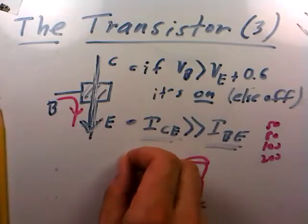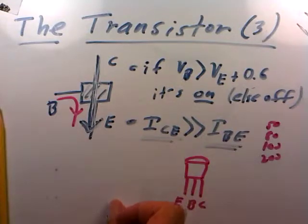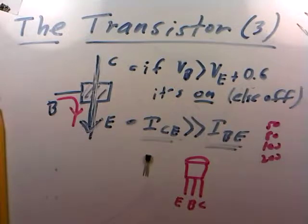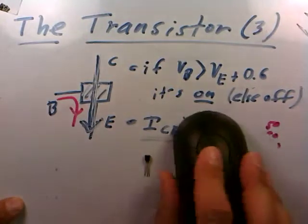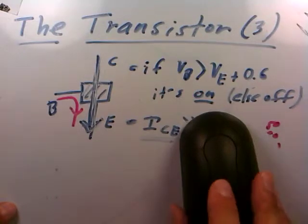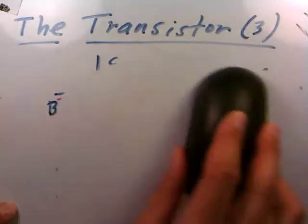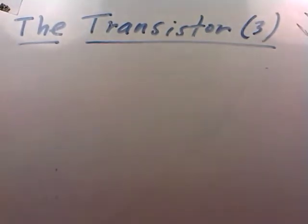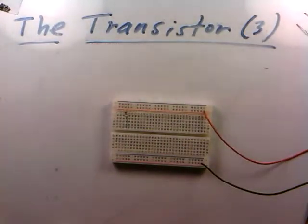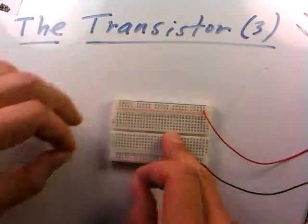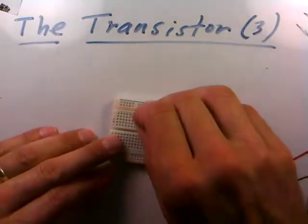If you reverse it and have the flat face down, the collector will be all the way on the left, the emitter all the way on the right, and the base remains in the center. What we'd like to do is wire up the transistor using LEDs as a proxy for the amount of current that's flowing to demonstrate the current flow effect.